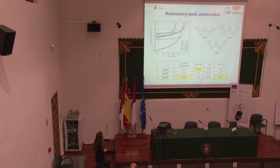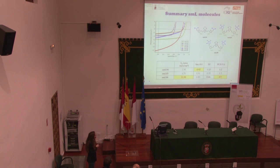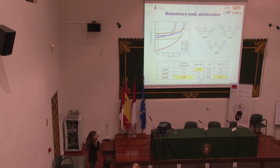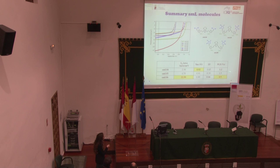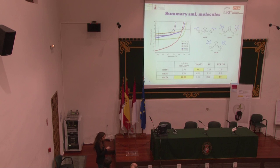Just to introduce the second family of compounds: the first molecule, molecule six, uses EDOT with just one alkyl chain on the thiophene and rhodanine as the acceptor group. The efficiency achieved was 4.9% with a really high open-circuit voltage.